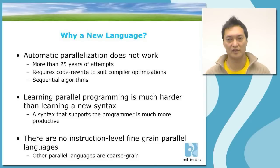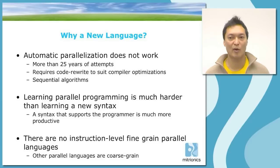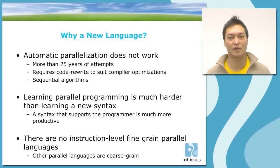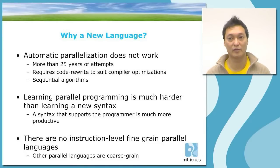Another reason why a new language is needed is that learning parallel programming is much harder than actually learning a new syntax. A new syntax can be learned by most programmers in a couple of weeks. However, parallel programming is a completely new paradigm and a different way of thinking — that is much harder than just learning a new syntax. So, if you have a programming language with a syntax that supports the programmer in writing parallel code, that will be much more productive than trying to write parallel code in a traditional sequential language. Finally, there are no well-supported parallel programming languages that are sufficiently parallel to give instruction-level granularity. There are a number of good languages for coarse-grained parallelism — for example MPI, OpenMP, or UPC — but for fine-grained parallelism, there are no languages with good support.